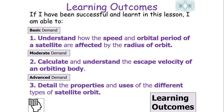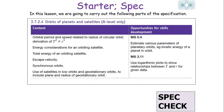If we're successful in what we learn in this lesson, we should be able to understand how the speed and orbital period of a satellite are affected by the radius of its orbit, calculate and understand the escape velocity of an orbiting body, and detail the properties and uses of the different types of satellite orbit, which falls into the following part of the AQA A-level physics specification.